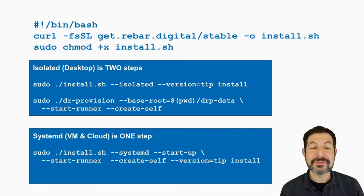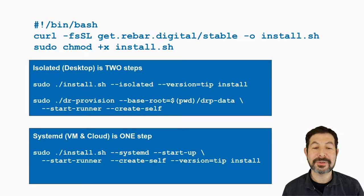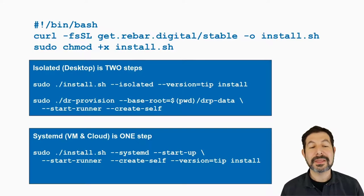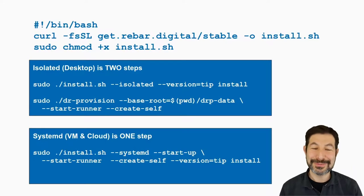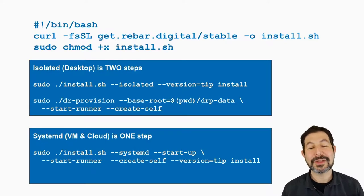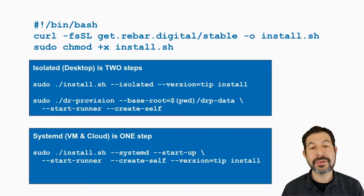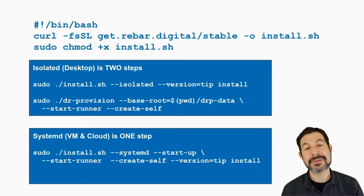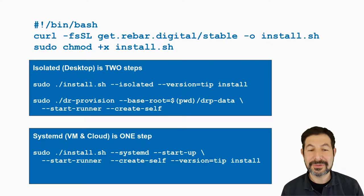In the isolated version, you have to start the Digital Rebar provision runner yourself — you tell it where the files are going to be and identify that it's a start to create itself. In the cloud and VM models, you can run it as a systemd process. When you run install.sh and pass in systemd and tell it to start up, it will install as a systemd process and start it, with parameters built into the systemd definition. If you have a dedicated machine for Digital Rebar, it's super easy to just use the systemd install.